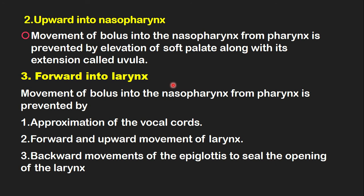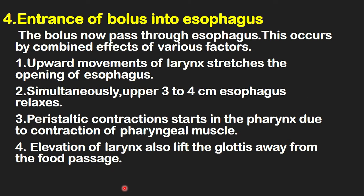Food is prevented from entering the larynx by the approximation of the vocal cords, the forward and upward movement of the larynx, and the backward movement of the epiglottis to close the opening of the larynx. These three actions prevent food from entering the larynx. The next stage is the entrance of the food into the esophagus. With all entries closed, the food has only one way to go — that is, into the esophagus.